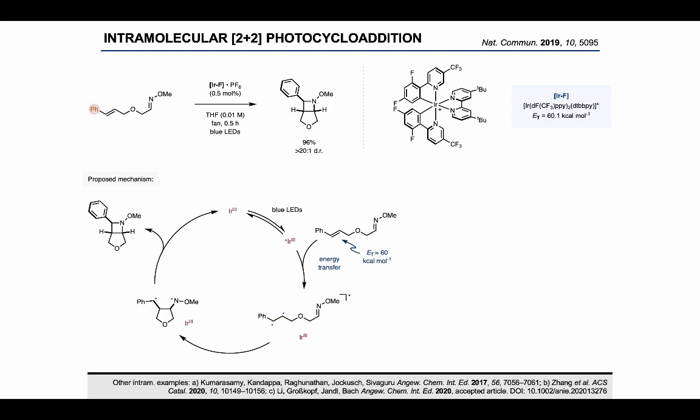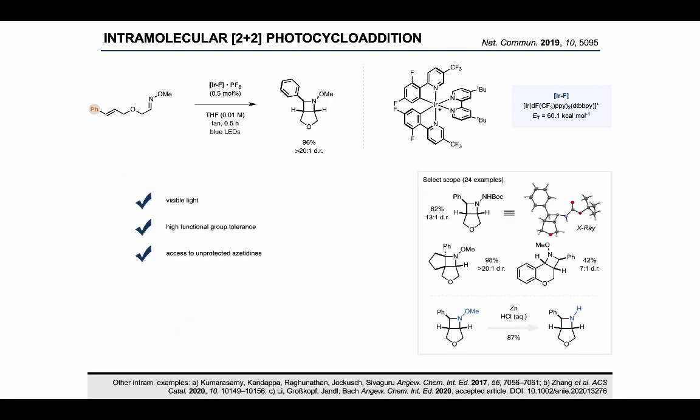While this protocol could be carried out in very mild conditions with visible light, which really enabled a broad substrate scope and high functional group tolerance, and also for the first time gave access to these unprotected azetidines through N-O bond cleavage under reductive conditions as shown on the bottom right hand side of the slide, we weren't quite happy that we needed to use activated alkenes with low enough triplet energy, specifically styrenes in this case.